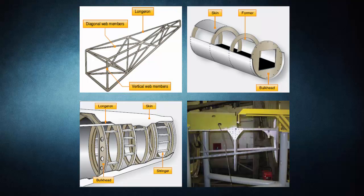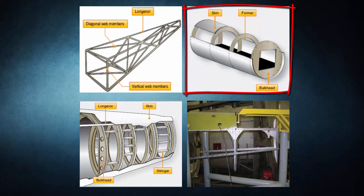The monocoque, or single-shell, fuselage relies largely on the strength of the skin or covering to carry the primary loads. The design may be divided into two classes: monocoque and semi-monocoque. Different portions of the same fuselage may belong to either class, but most modern aircraft are considered semi-monocoque. True monocoque construction uses formers, frame assemblies, and bulkheads to give shape to the fuselage. Since no other bracing members are present, the skin must carry the primary stresses and keep the fuselage rigid, making weight management the biggest challenge in monocoque construction.